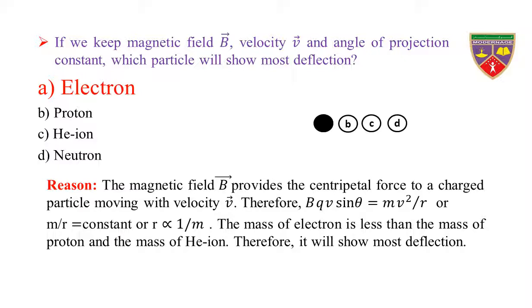Reason: The magnetic field B provides the centripetal force to a charged particle moving with velocity V. Therefore, BQV sinθ = MV²/R, where MV²/R is the centripetal force provided by the magnetic field, and BQV sinθ is the magnetic force. Since B, Q, V, and sinθ are all constant, M/R = constant.